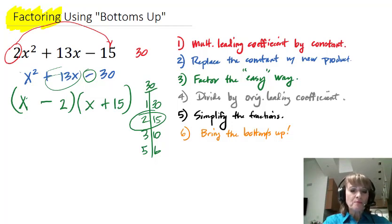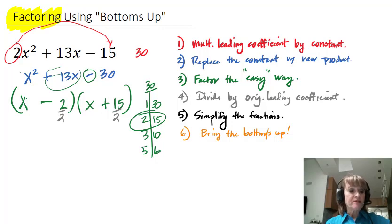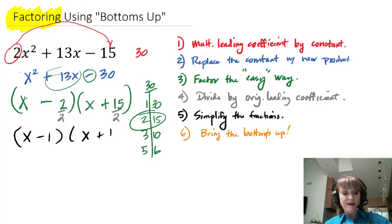So we're ready for the gray step. The gray step is divide by the original leading coefficient. The original leading coefficient was 2, so I'm going to divide by 2. Now we're going to go to the black step, which is to simplify the fraction. So this turns into x minus 1, and this doesn't simplify so we just write it again.